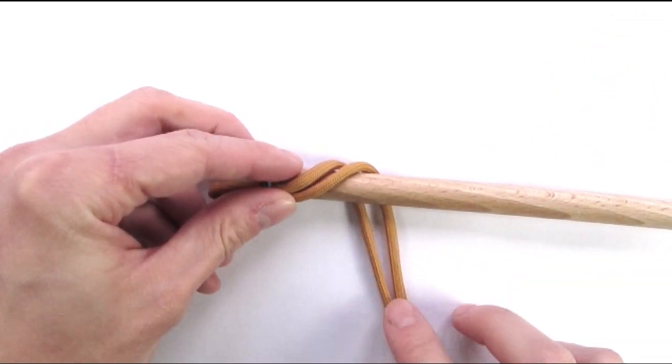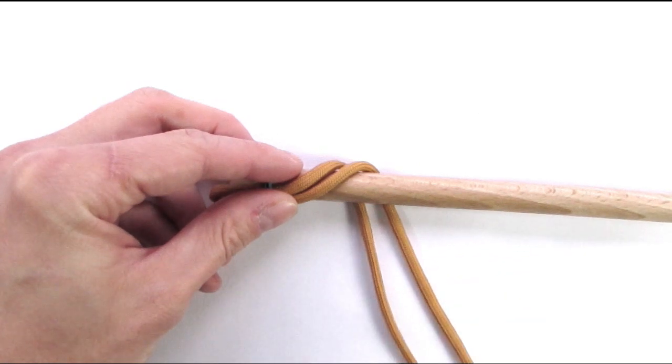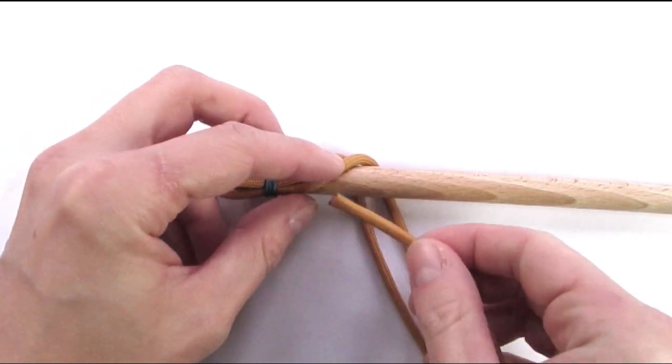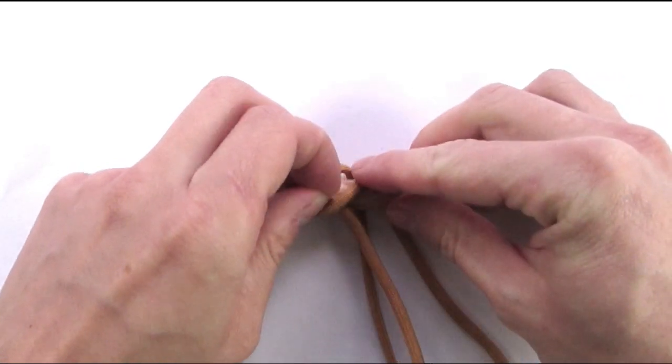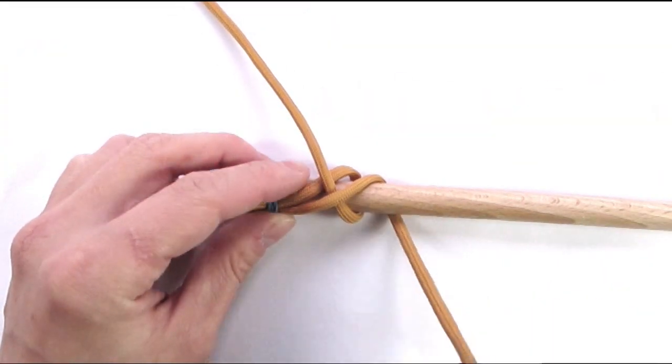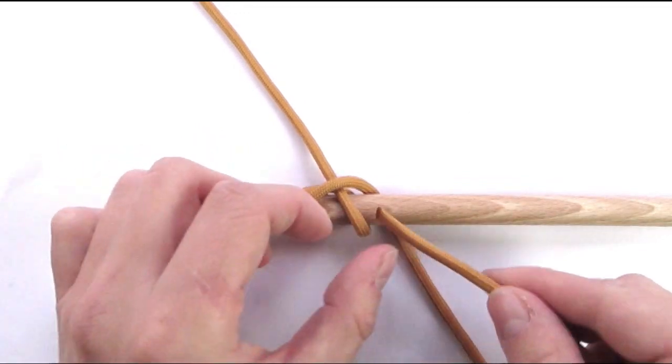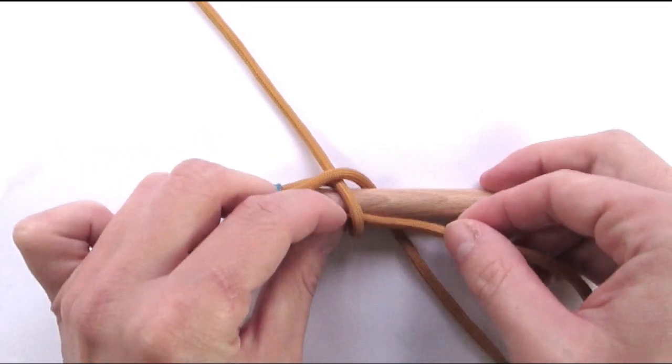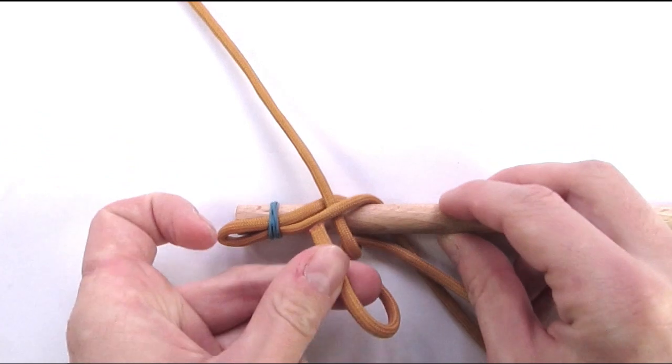I'm then going to take the bottom left of these cords and I'm going to go under over towards the left. I'm now going to take the second cord and I'm going to go under the first cord and then over one of these cords.